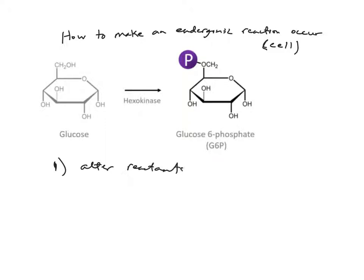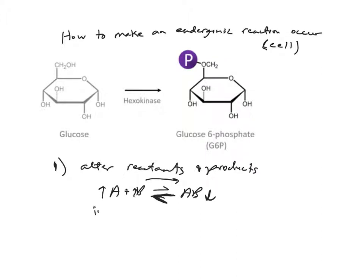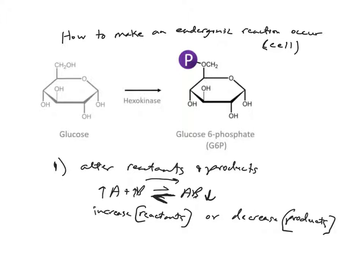The first way is to alter the reactant and product levels. If we take a general reaction A + B → AB, and this is an unfavorable reaction, it means the reverse direction is highly favorable. But if we remove some of the products, or increase the concentration or amount of reactants, or decrease the amount of products — often by using them up — that is going to force this unfavorable reaction to move forward toward equilibrium.